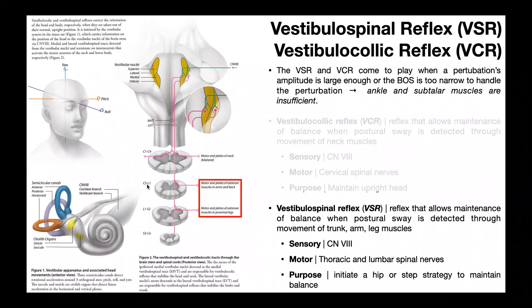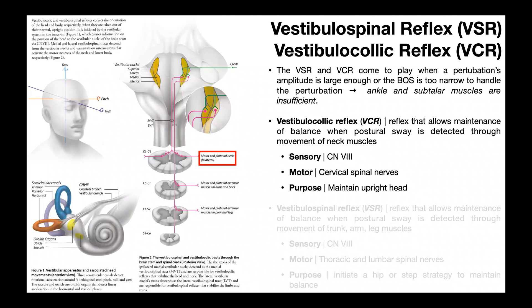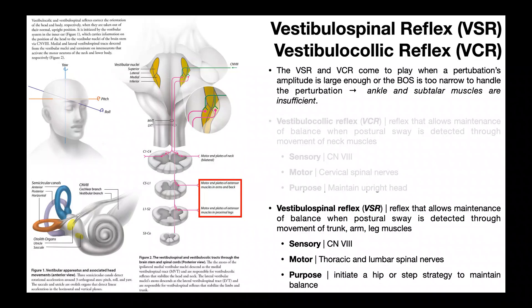So basically C5 and down. This reflex is ultimately controlled by the lateral vestibular nucleus and tracts, but their control is only ipsilateral, unlike levels C1 through C4. The purpose of the vestibulospinal reflex is to initiate a hip or step strategy to maintain balance. With the VCR, you can maintain your head position, but if your legs, arms, and trunk don't react in a way that keeps you upright, you're going down. Losses of balance involve keeping the head upright, but also the rest of the body has to react to stay upright.